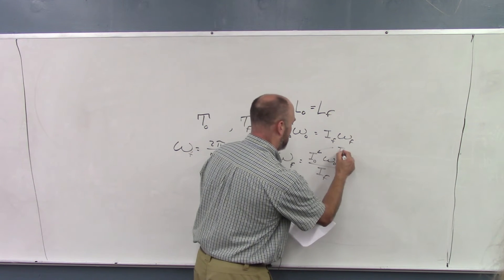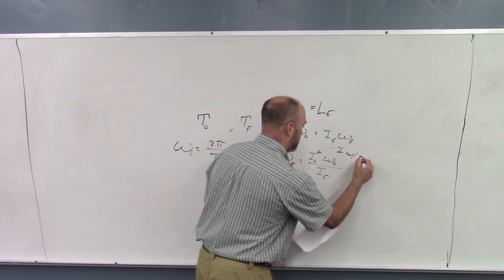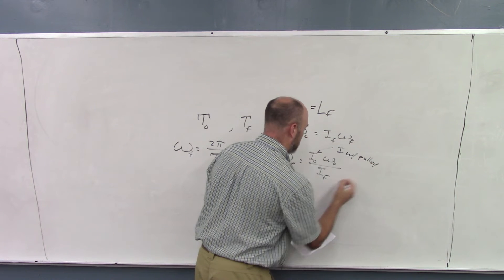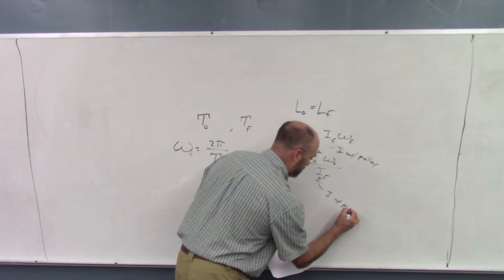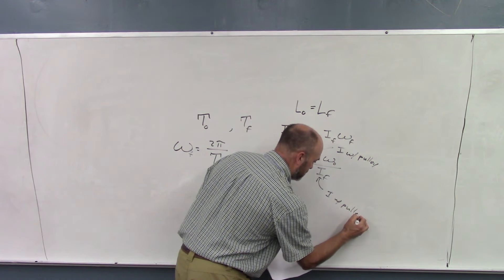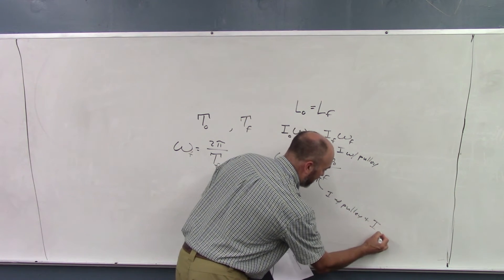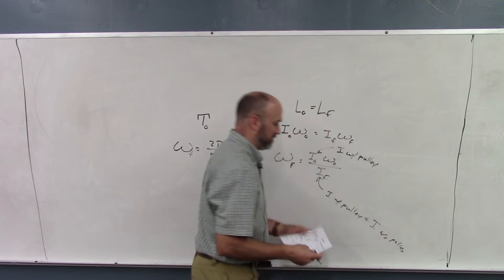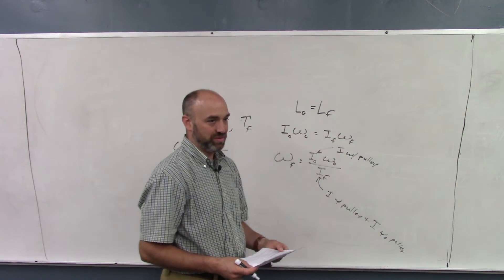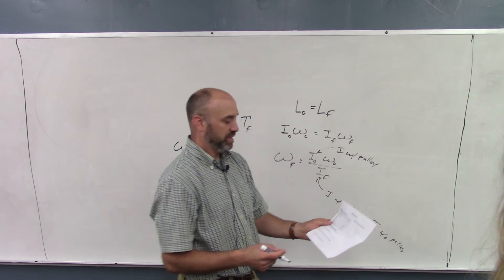So I think this is I with pulley, and then this one is I with pulley plus I without the pulley. Okay. Because this is two discs stuck together. Gotcha. Does that make sense?